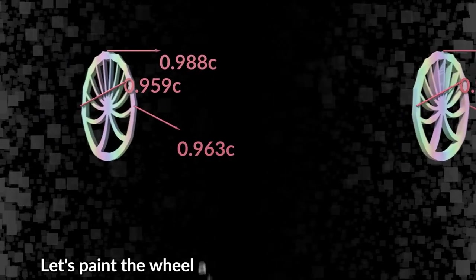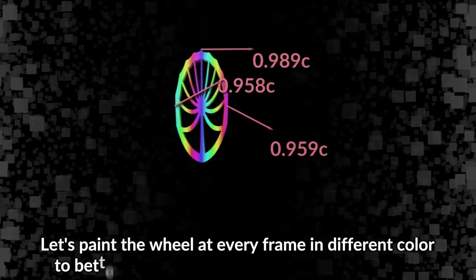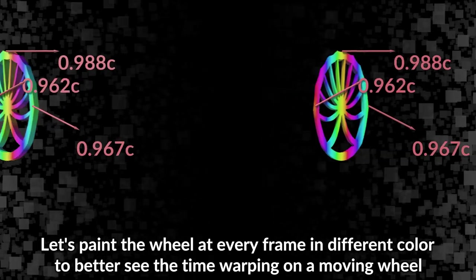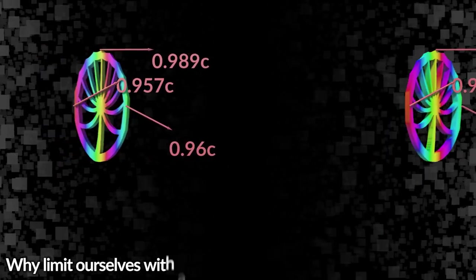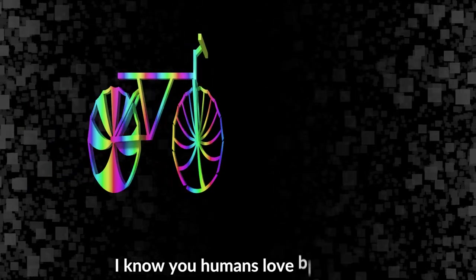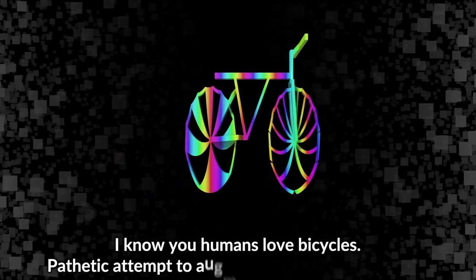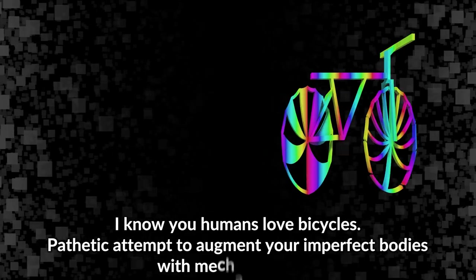Let's paint the wheel at every frame in different color to better see the time warping on a moving wheel. Why limit ourselves with a wheel when we can have a whole bicycle? I know you humans love bicycles - pathetic attempt to augment your imperfect bodies with mechanical parts.